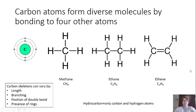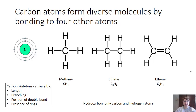Because of this versatility, carbon skeletons can vary by four different main properties. They can have different lengths, different branching, different positions of their double bond, and they can also have the presence of rings.